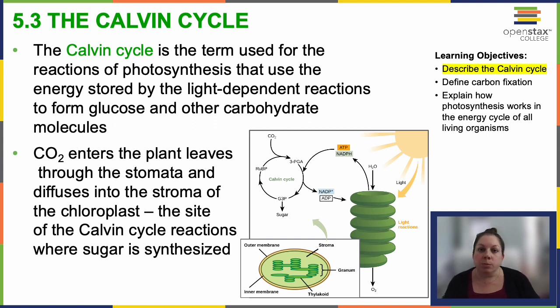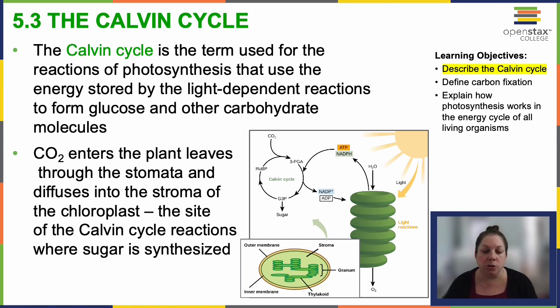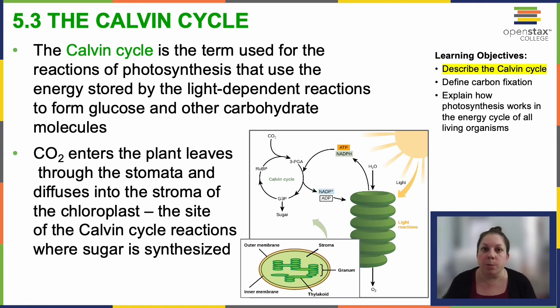The term Calvin Cycle refers to the photosynthesis reactions that utilize the energy amassed during the light-dependent reactions, and they're used to then produce glucose and other carbohydrate molecules.